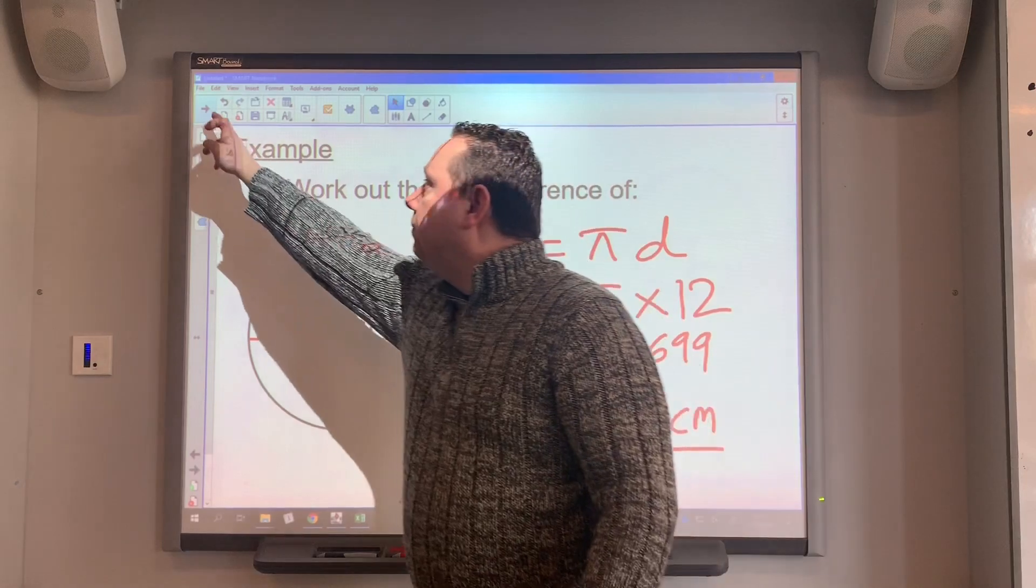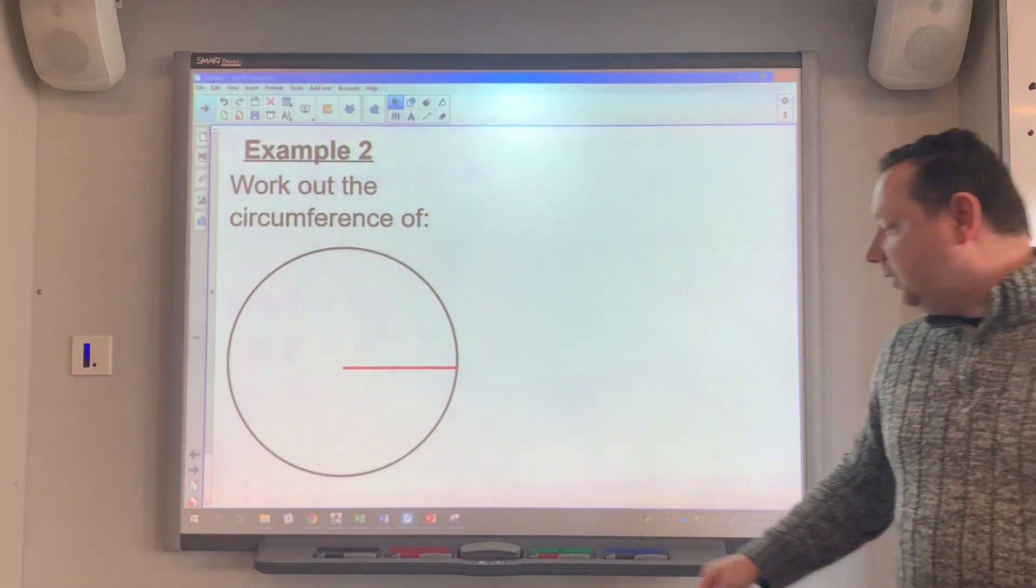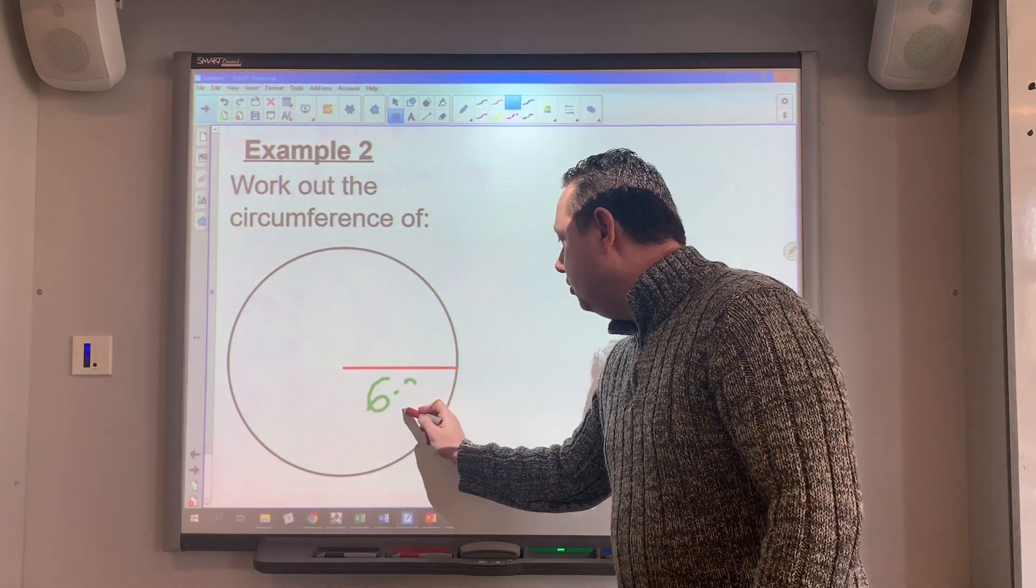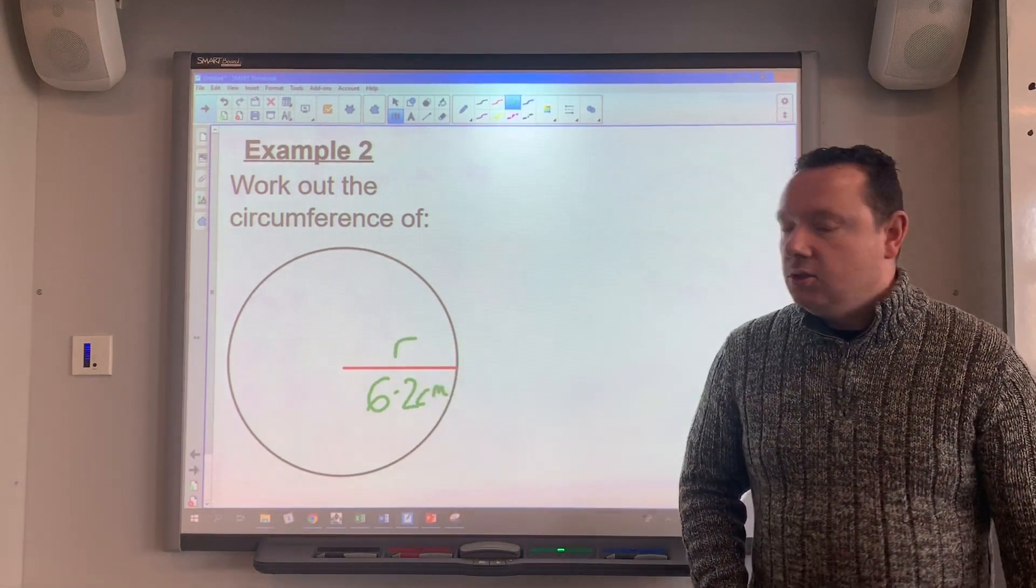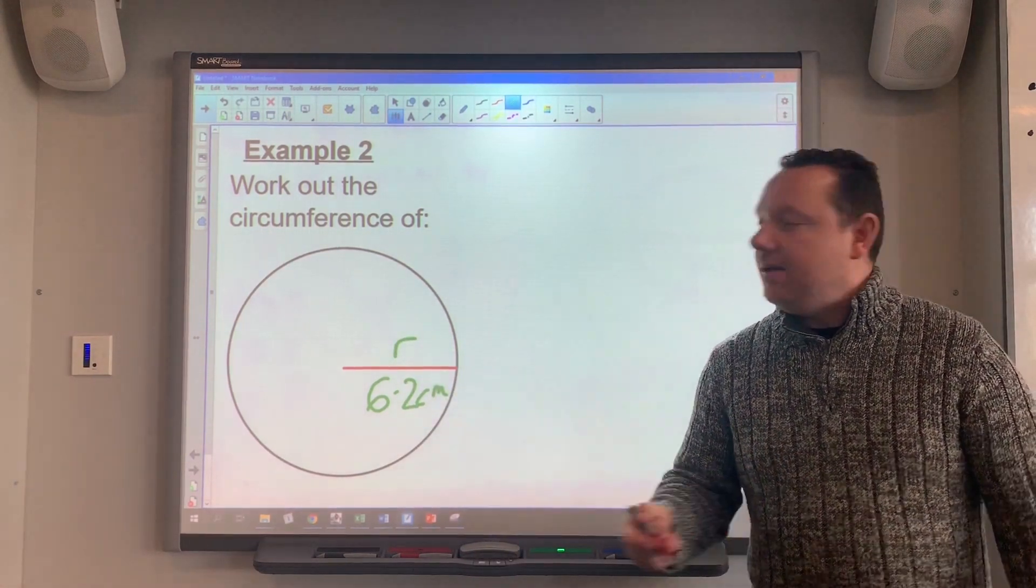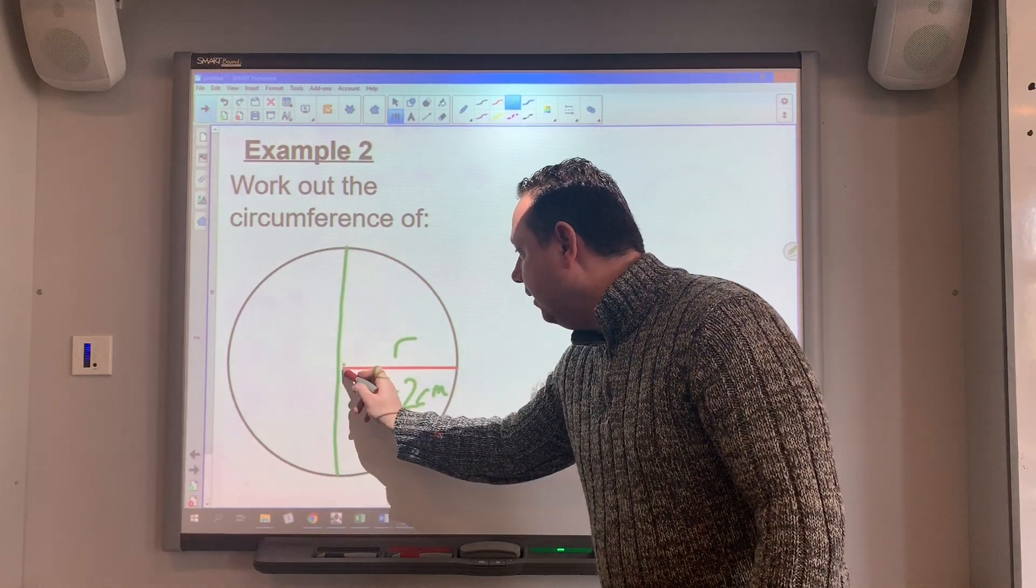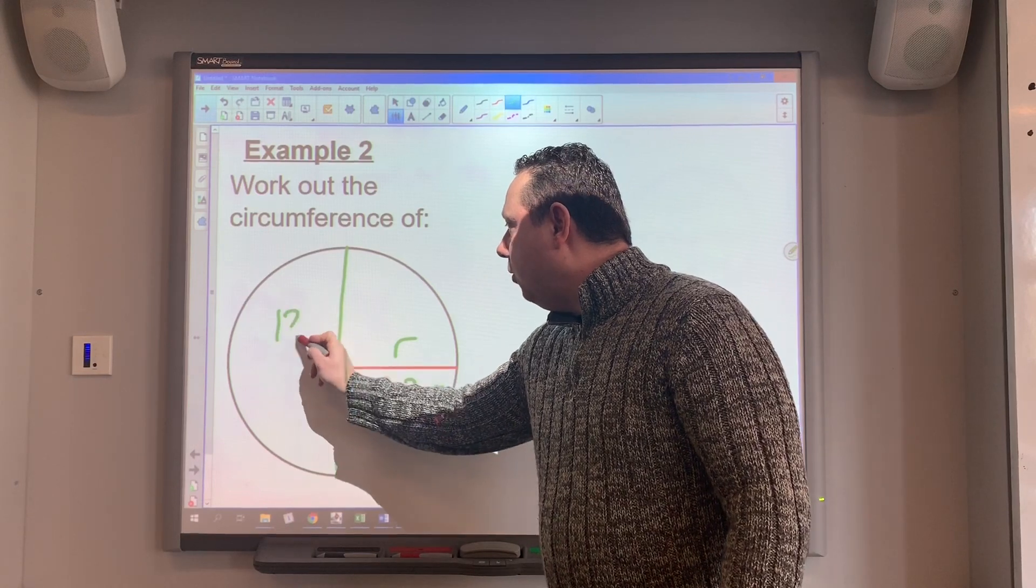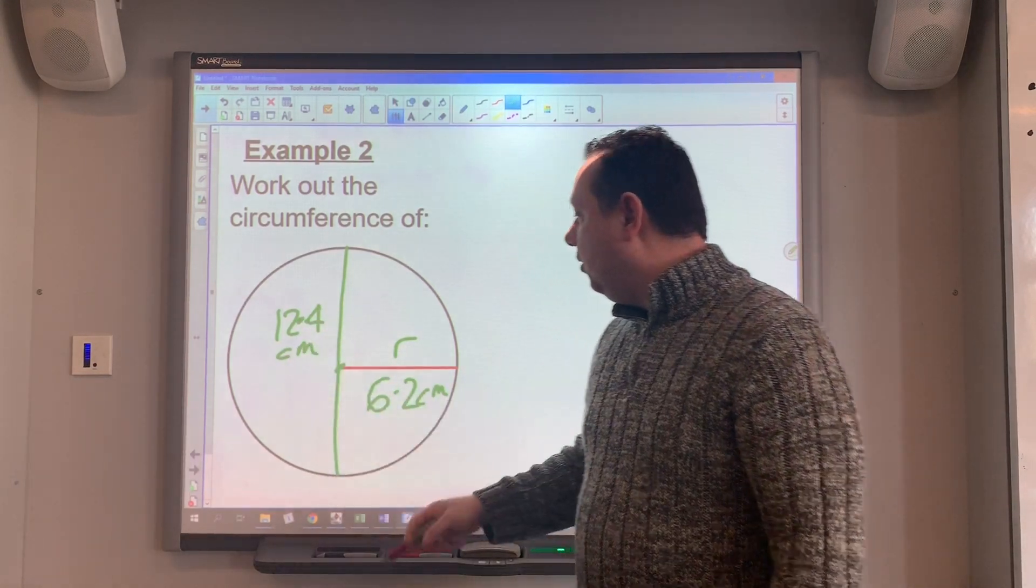Okay, let's do another example. So example two says work out the circumference of this. So let's say that this number here was 6.2 centimeters. But remember, that's R. So step one, I need to find the diameter. So if I quickly draw a sketch of a diameter in here, the diameter here would be 12.4 centimeters because it's double the radius.